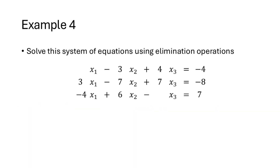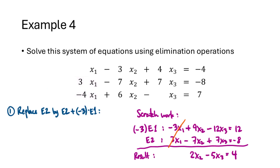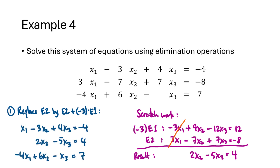The real advantage of the elimination method is that it lets us more methodically handle larger systems. Our initial goal for the three-equation, three-variable system is to eliminate all occurrences of x1 from the second and third equations using replacement operations. We replace equation 2 by equation 2 plus negative 3 times equation 1. Multiplying equation 1 by negative 3 gives negative 3x1, which cancels the positive 3x1 in equation 2, yielding a new second equation: 2x2 minus 5x3 equals 4.